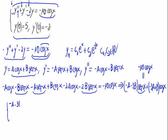Separating sine and cosine: with the sine we get -a - 3b = 0, and with the cosine we get -3a + b = -10.